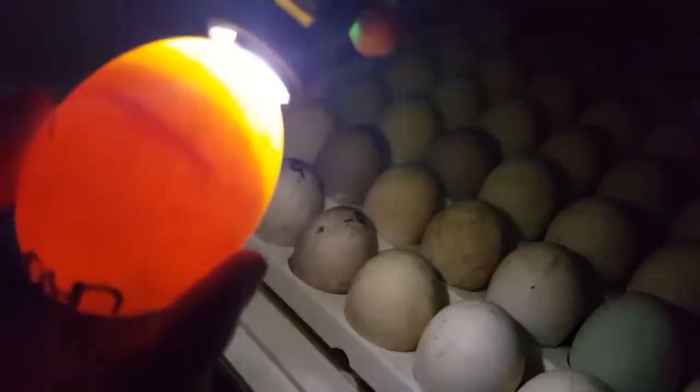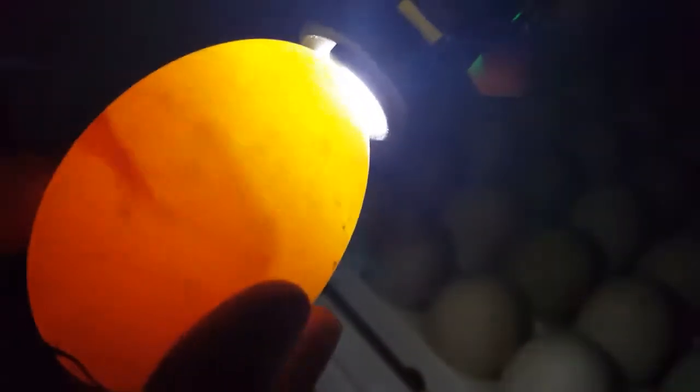This one here looks like it has the black ring around it, and that usually means there's some kind of infection in the egg, at least that's what I'm told. I'm going to leave it in here for a little while longer to see if it develops.